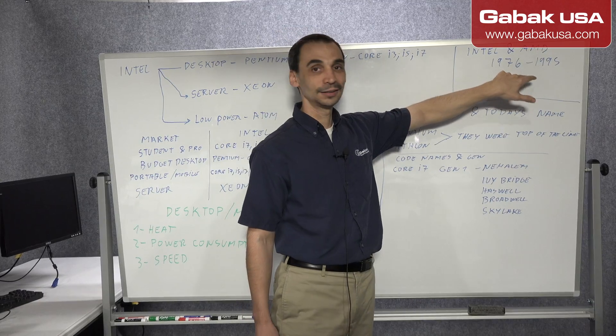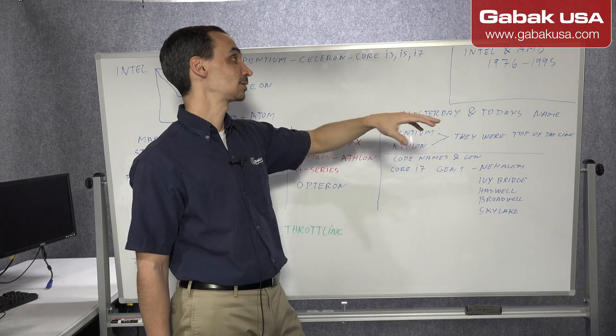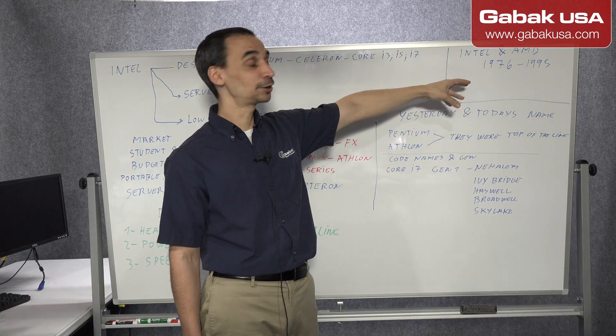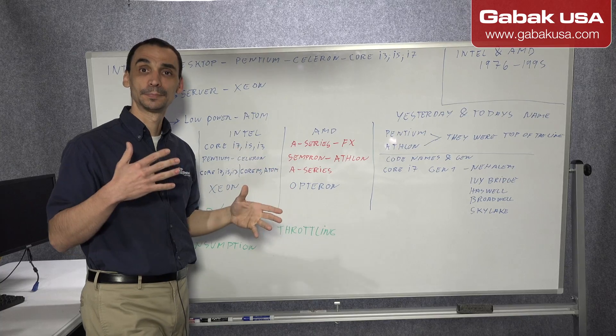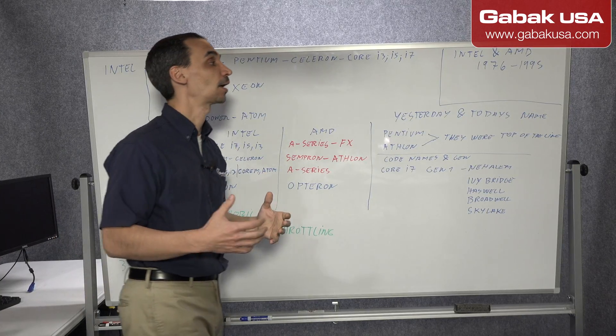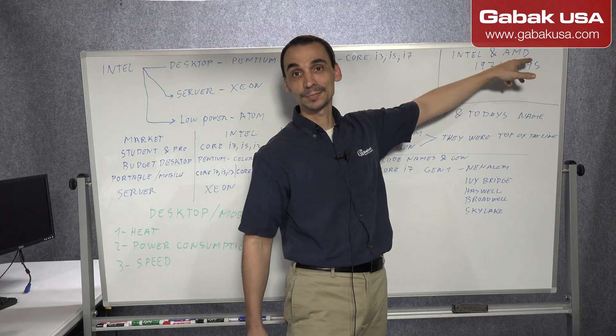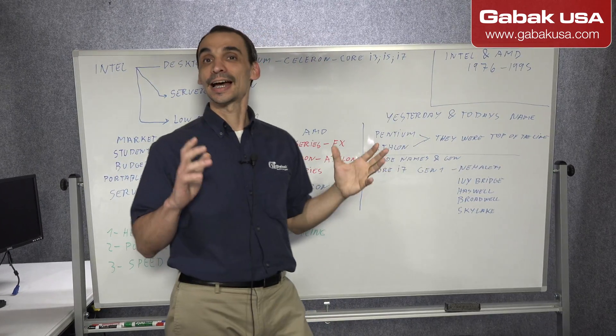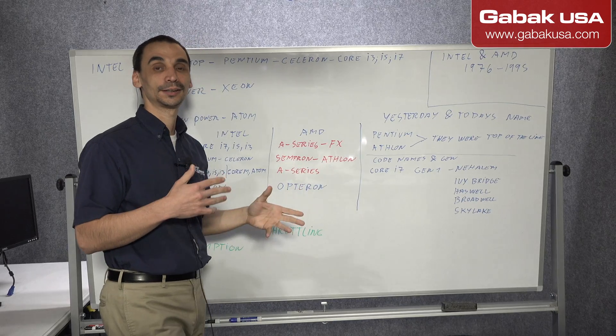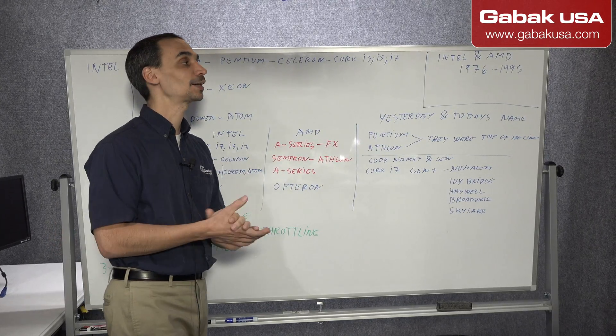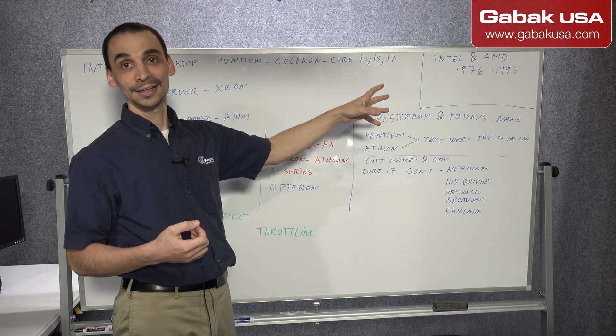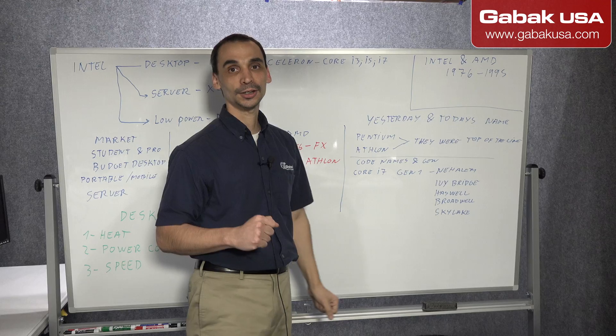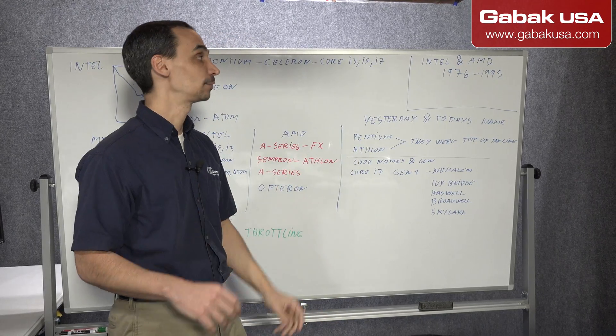So Intel started around the 70s. At that year they started producing CPUs and everything else. And AMD as well. So in 1976, IBM started with their business about computers and everything else. And they request to Intel, okay, we need processors. Please manufacture a few so we can buy from you.